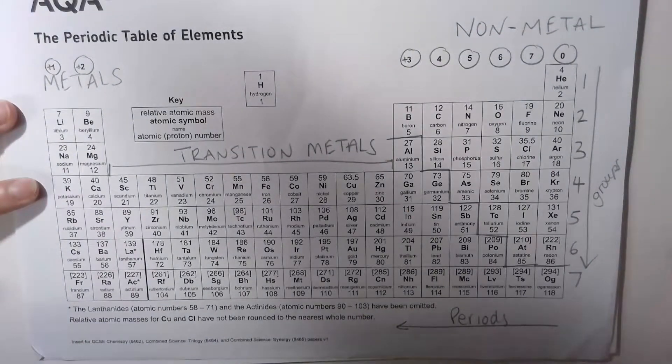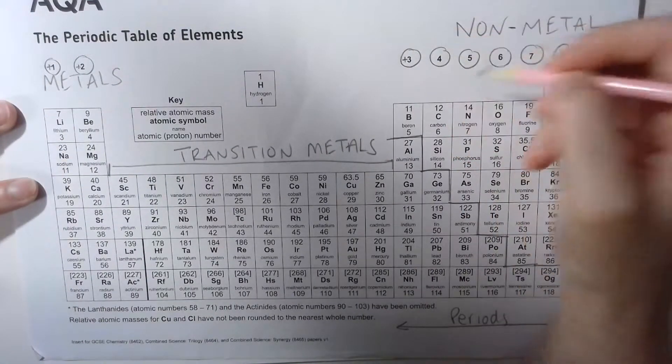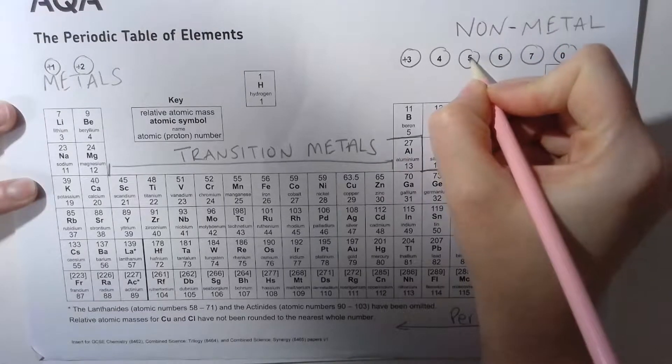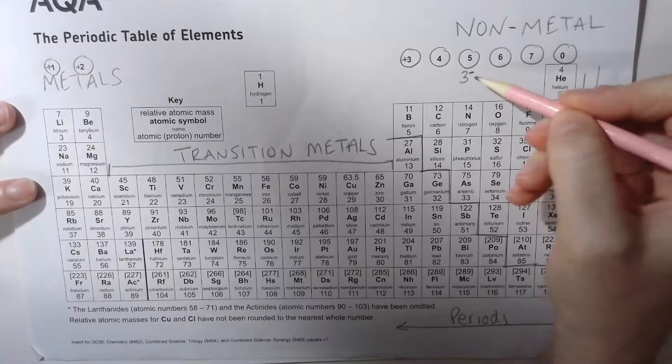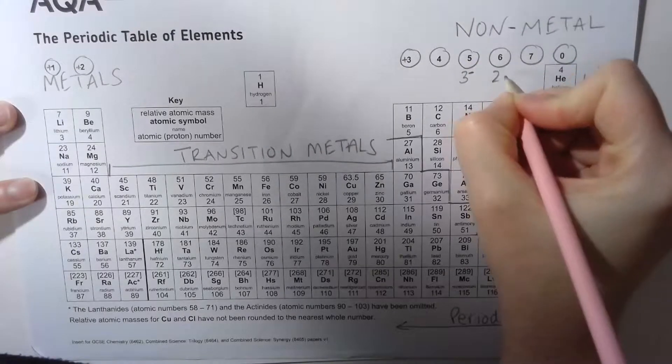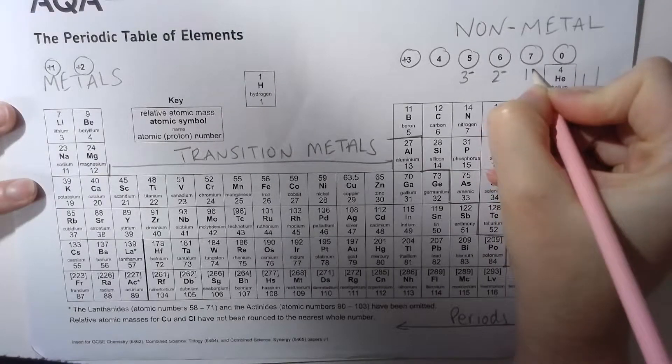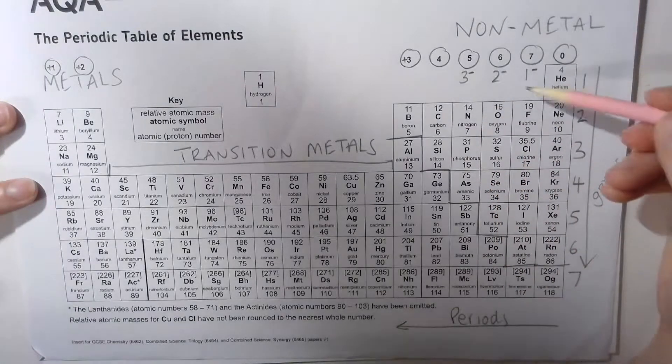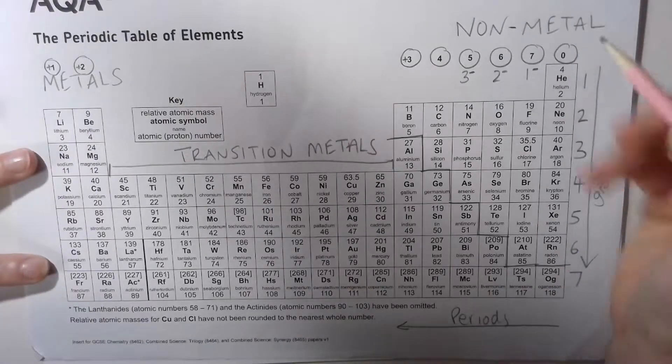Group four is different in the middle; we'll leave that one separate. Group five becomes three minus charge because they want to gain three electrons to make this up to eight. Group six becomes a two negative charge, and group seven becomes a one negative charge. The noble gases have a zero at the top of their group.